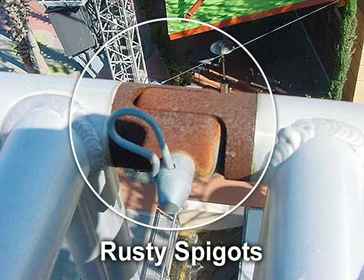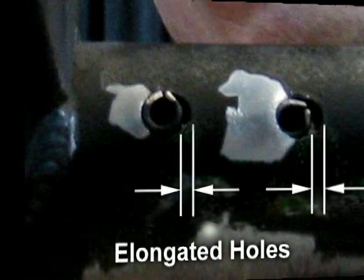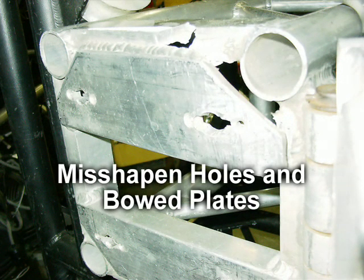Double check the connections to ensure that there are no rusty or bent spigots, elongated holes, misshapen holes including both the clevis pin and roll pin location, cracked roll pins, or plates that are bowed outward.